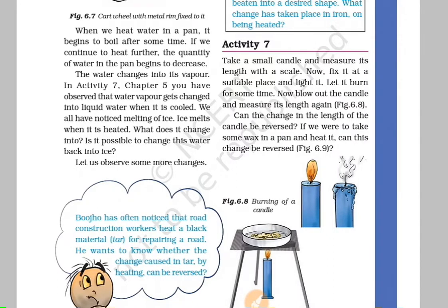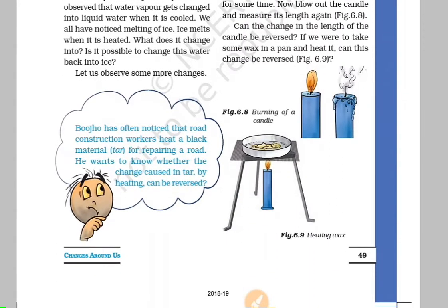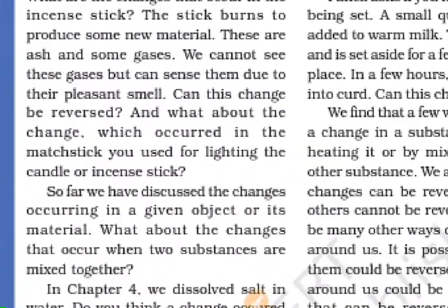Heat, cool, compress. Wax — you add heat and it becomes liquid. Then the liquid cools back to a solid. Again solid substance. So this is a reversible change.